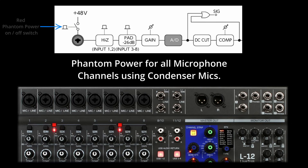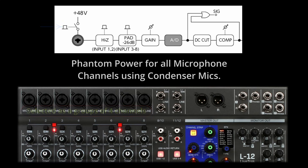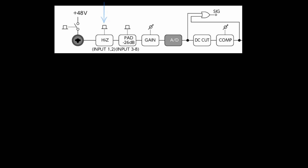Next in line is phantom power. When using condenser microphones and some ribbon microphones, you need to turn on the phantom power switch. On this board you can have phantom power on channels one through four, or channels five to eight, or both. If you're using dynamic microphones that don't require phantom power, you can leave it off. If you have both types of microphone, you can leave the phantom power on as it will not affect the dynamic mics.